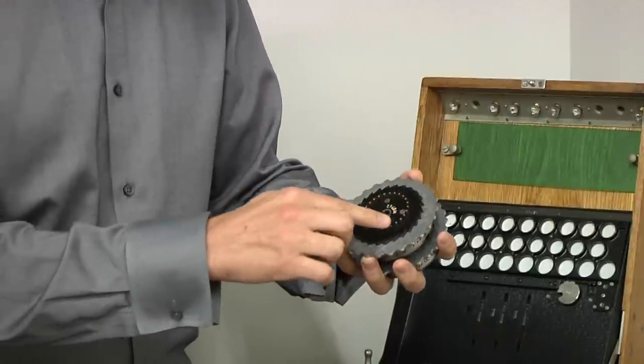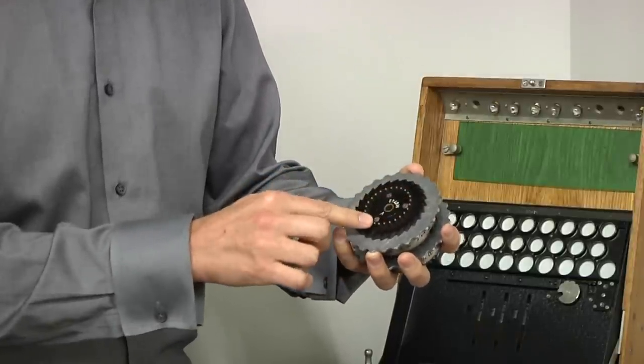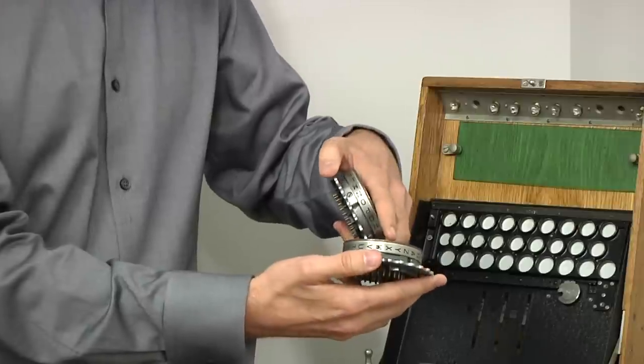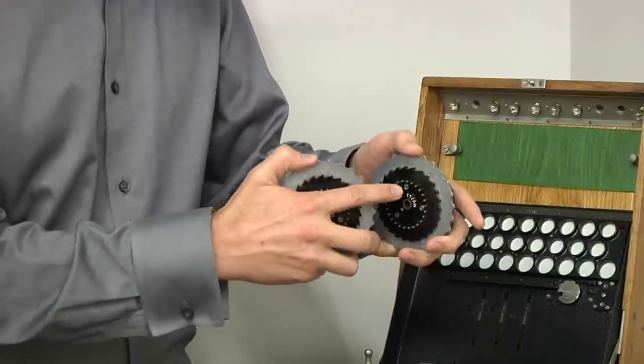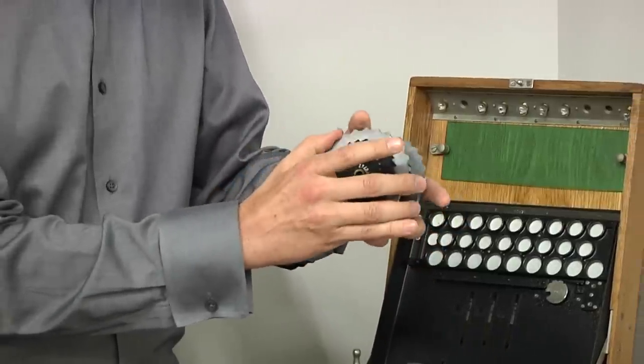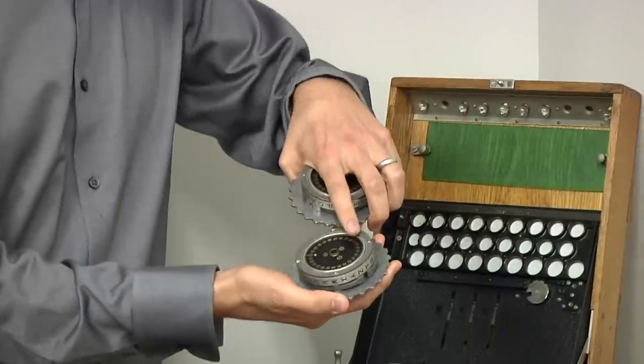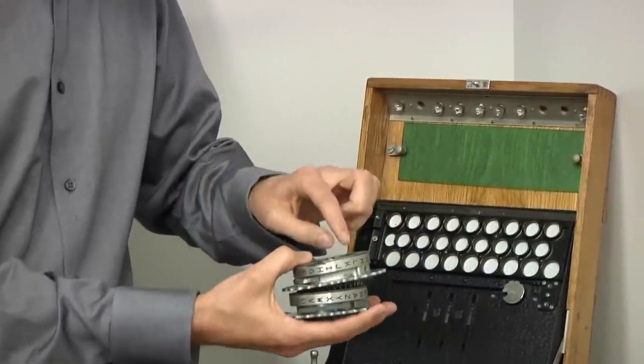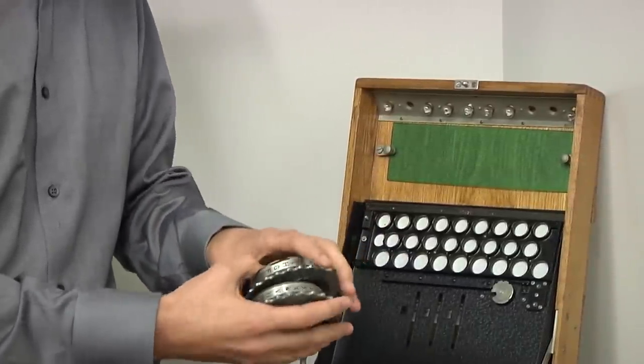If I take two rotors together, you'll notice that there are these 26 pins here. As this rotor turns, the connection on this side changes which pin gets electricity over here. If I power up one pin here, another contact gets powered, that changes which connection here gets powered, which changes which connection here gets powered, and so forth.